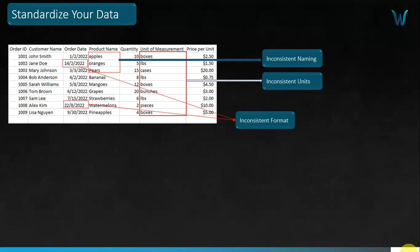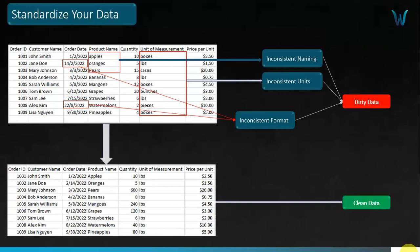You also have inconsistent units in the inventory column — different units like boxes, cases, etc. — but you want just one consistent unit to help you make better analysis and insights. To make this clean, you standardize your data: same data types, same formats, same units of measurement. Now all dates are in month/day/year format, all product names are in proper case, and you have one unit — lbs — across all products.